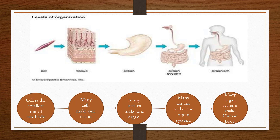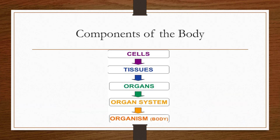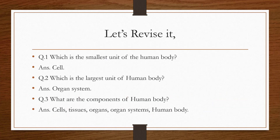We have many organ systems. For example, the digestive system, respiratory system, skeletal system, and the excretory system are some organ systems of the body. We will learn about these in our next videos. Today we learned the components of the body: cells, tissues, organs, organ systems, and the human body. Now let's revise, children.